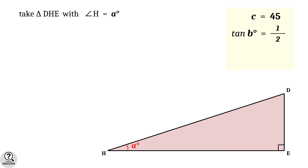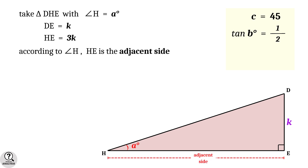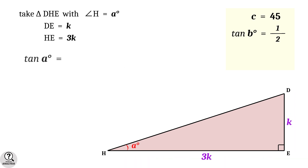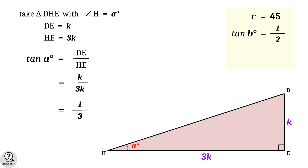Now take triangle DHE with angle H equal to a degrees. We have DE equal to k and HE equal to 3k. According to angle H, HE is the adjacent side and DE is the opposite side. Therefore tan a equals DE divided by HE, which equals k divided by 3k, giving tan a equal to 1/3.